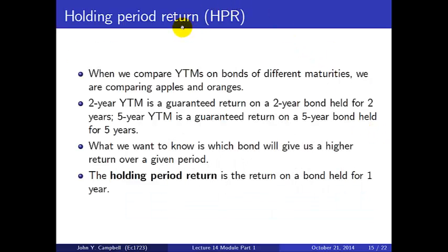Now let's introduce the holding period return, or HPR. When we compare yields to maturity on bonds of different maturities, we're comparing apples and oranges — the two-year yield is a guaranteed return on a two-year bond held for two years, and the five-year yield is a guaranteed return on a five-year bond held for five years. What we'd like to know as investors is which bond gives a higher return over a given period, but comparing yields varies the period.